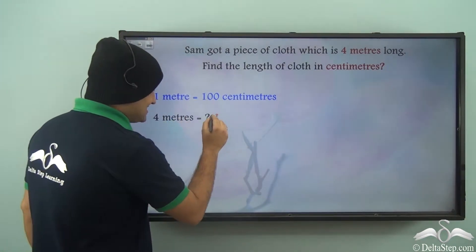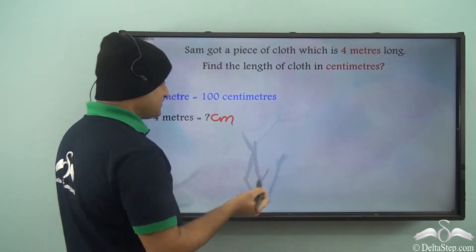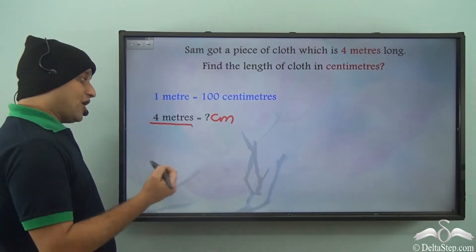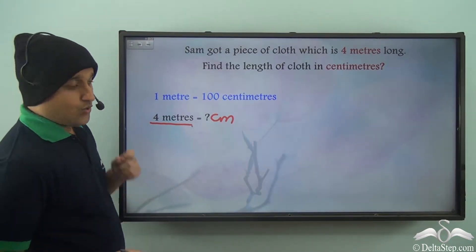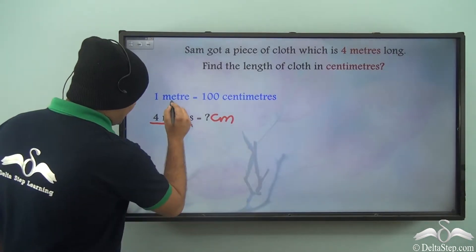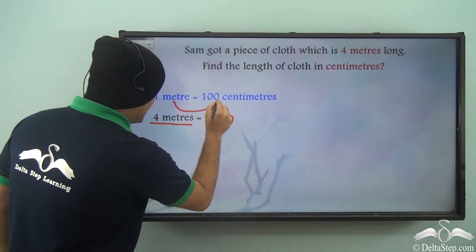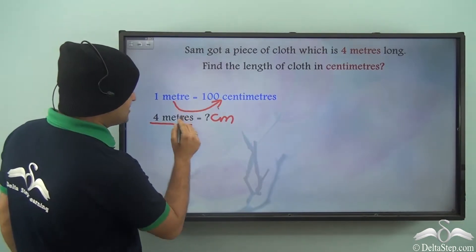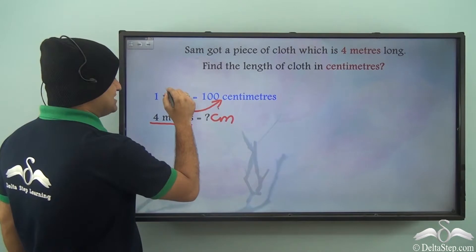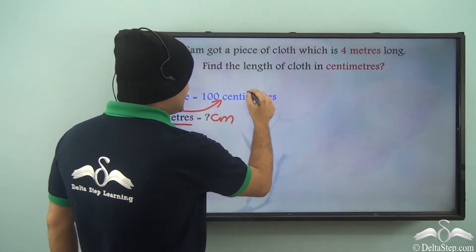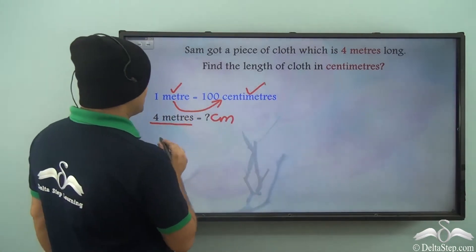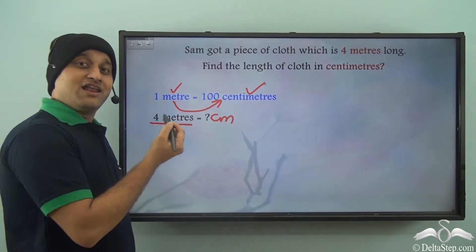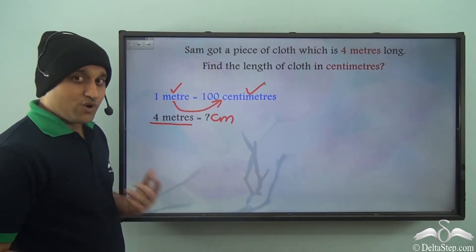We need to find the value of 4 meters in centimeters. When we convert from a larger unit to a smaller unit, that is from meter to centimeter, meter is a larger unit and centimeter is a smaller unit. So when converting from larger to smaller unit, we multiply.